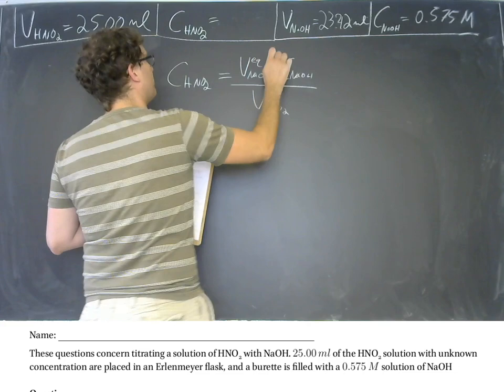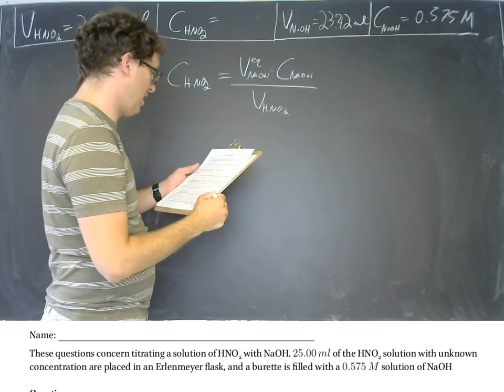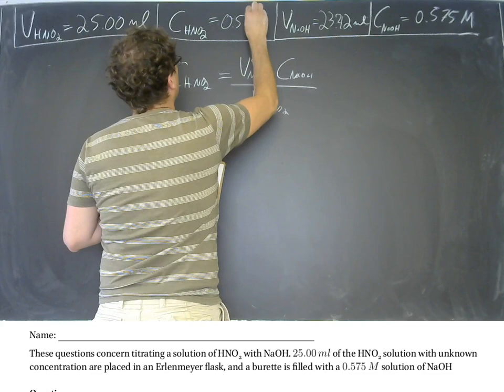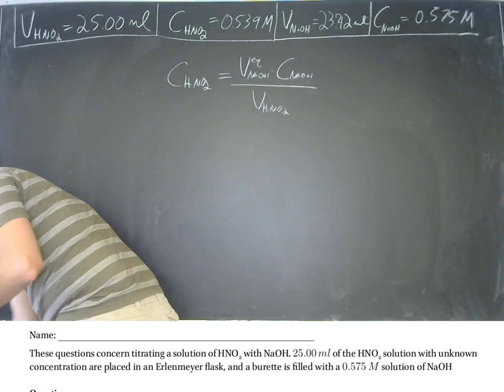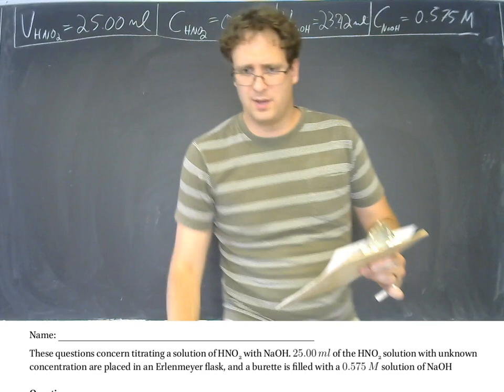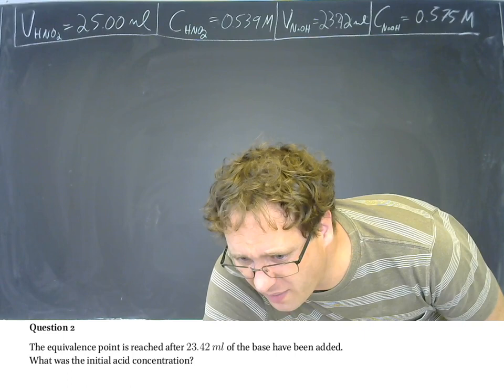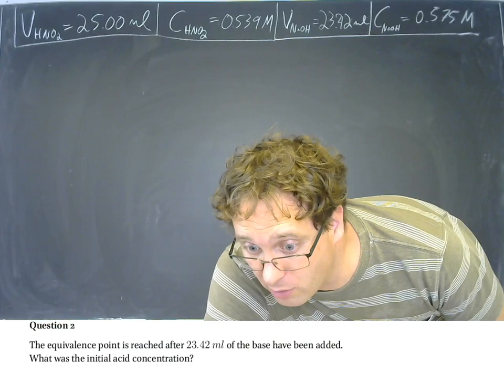That's technically the volume of NaOH at the equivalence point. Plugging those numbers in, we get a concentration of 0.539 molar. That's question two — finding the initial concentration, which is really the goal of most titrations and where you would normally end.